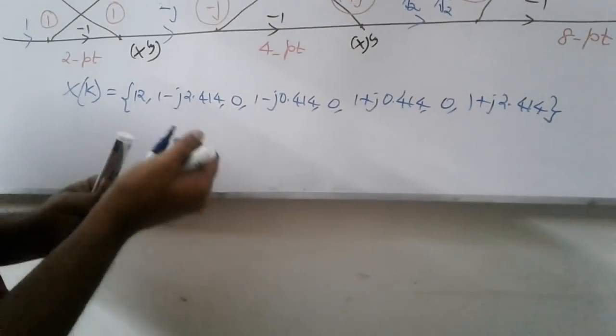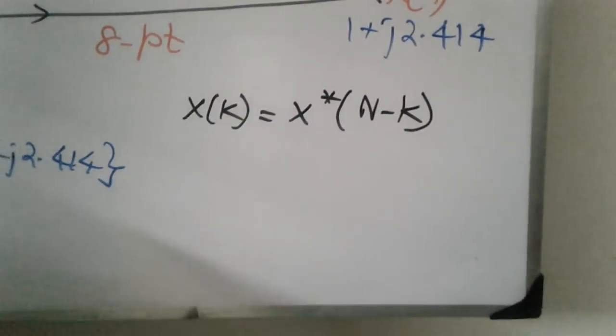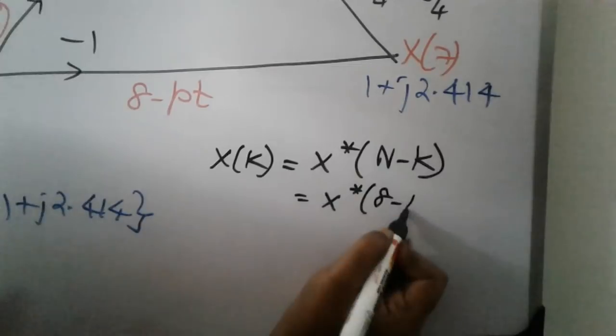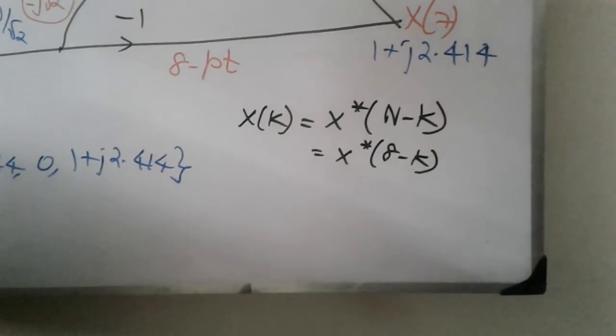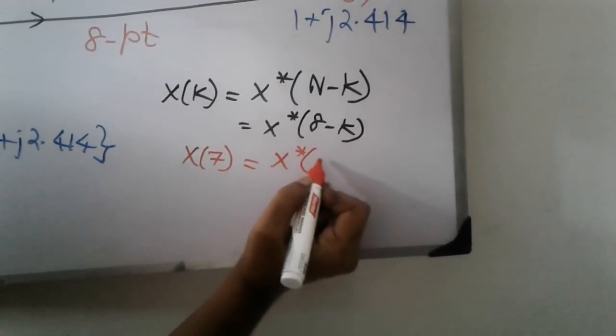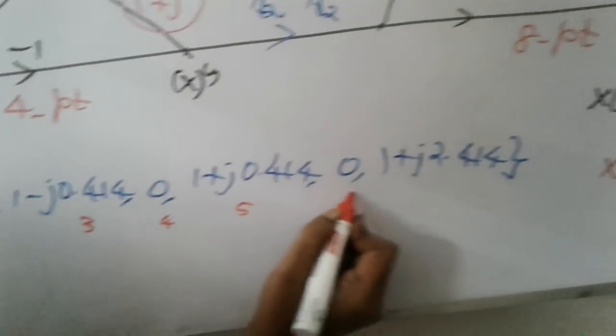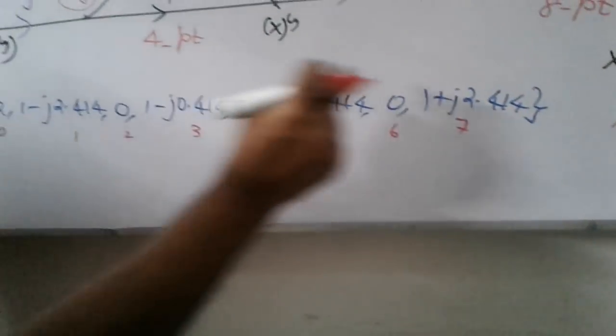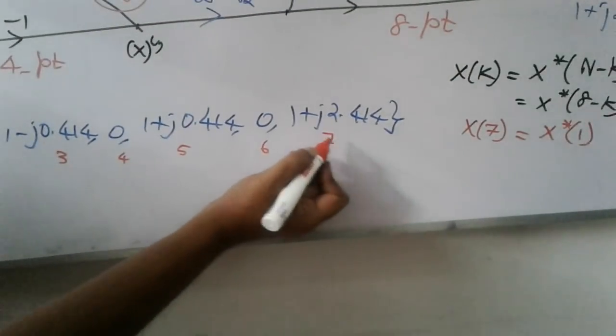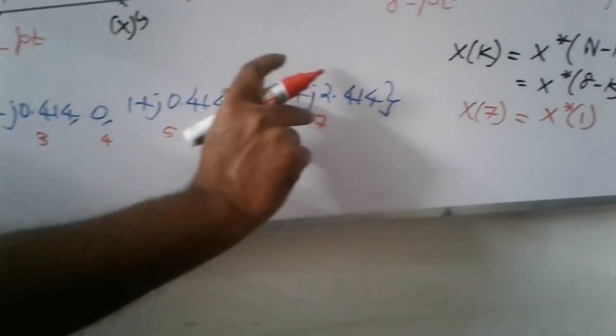Property says X of K should be equal to X star of N minus K. N is 8. So X star of 8 minus K. Suppose you want X of 7, X of 7 is nothing but X star of 8 minus 7 is 1. So X of 7 and X of 1 are conjugate. X of 1, X of 7 are complex conjugate. Correct. Similarly we can check X of 3 and X of 5. So the answer is right. Very important question. This is decimation in time.